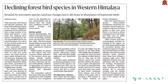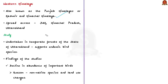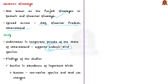Our next discussion is based on a Science and Tech article about a study highlighting the decline of forest bird species in western Himalayas. Western Himalayas, also known as Punjab Himalayas or regionally as Kashmir and Himachal Himalayas, refers to the westernmost section of the Himalayan mountain range spread across Jammu and Kashmir, Himachal Pradesh and Uttarakhand. The study was undertaken in the temperate forests of Uttarakhand, which house a large number of endemic bird species — meaning species that exist only in one geographical region, with habitat restricted to that area due to factors like climate change or urban development.